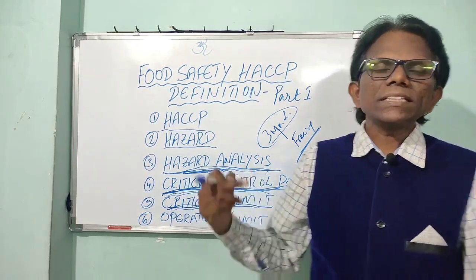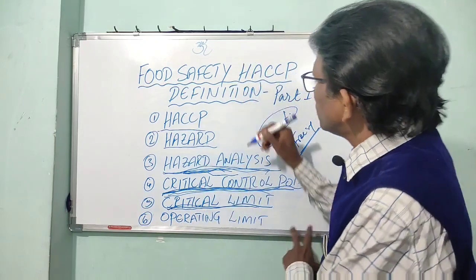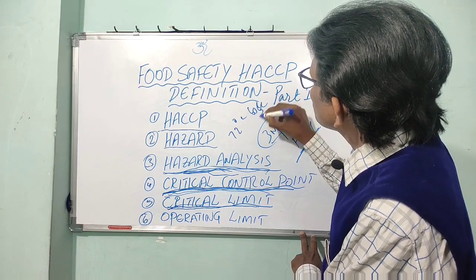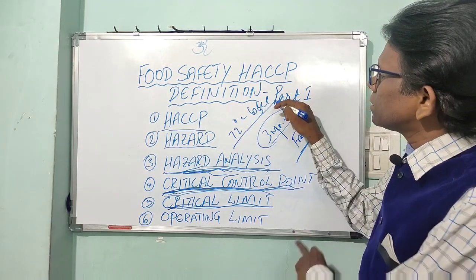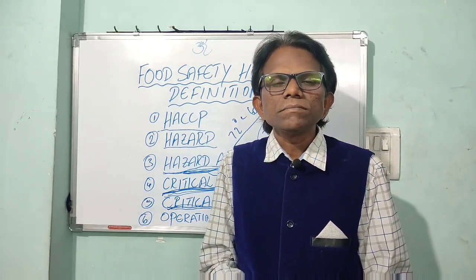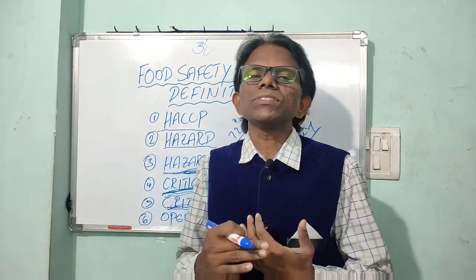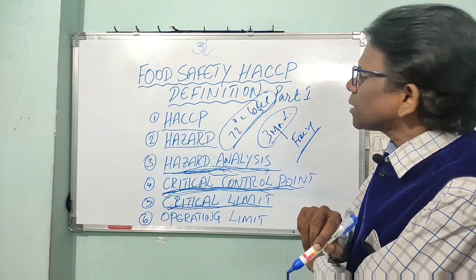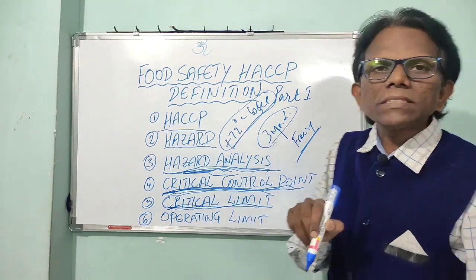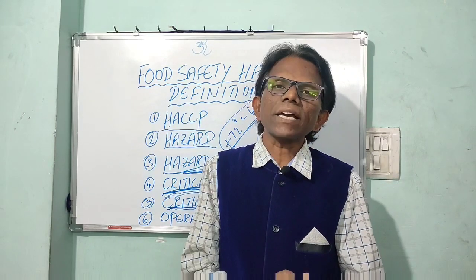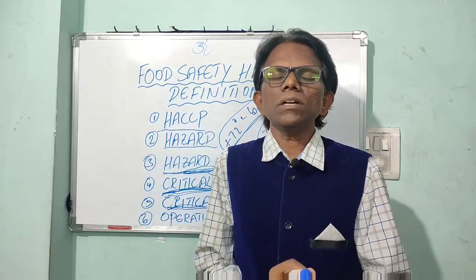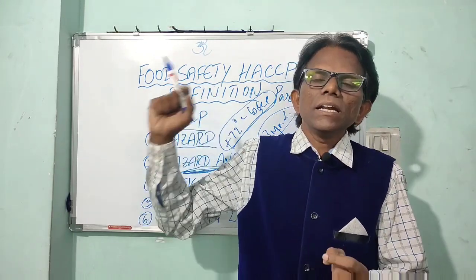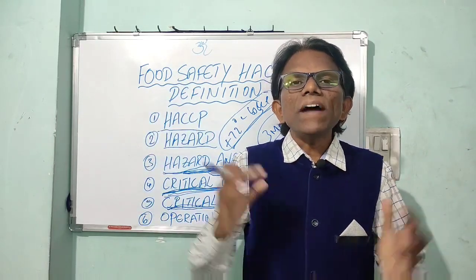For example, if we take cooking as a CCP, the critical limit is 72 degrees centigrade with a holding time of 60 seconds. If this is not achieved, pathogens like Salmonella or Listeria may survive. A core temperature of 72 degrees centigrade held for 60 seconds will control pathogens at 99.999999% as per the USFDA lethality study validation.